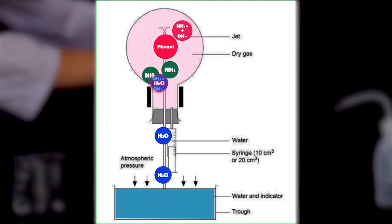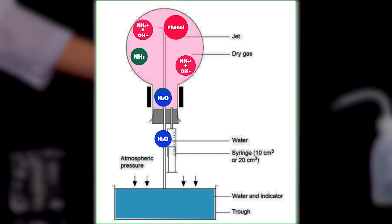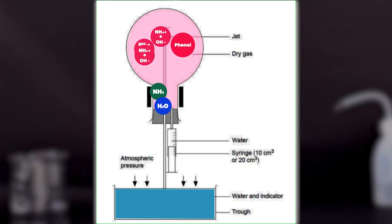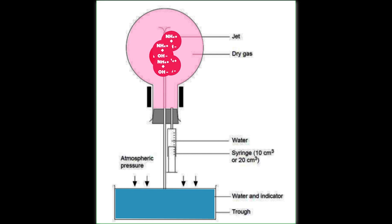This solution is denser than the surrounding water. This also reduces pressure inside the flask since less ammonia gas is present. Both factors result in an upward flow of the solution.